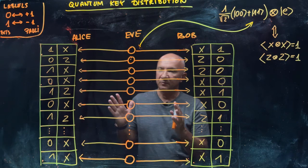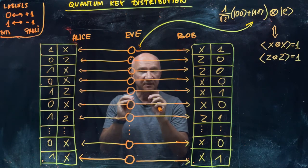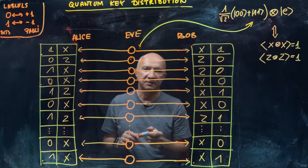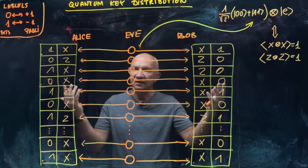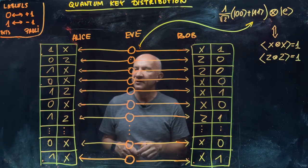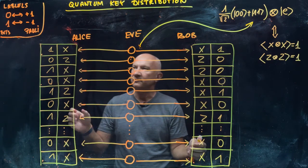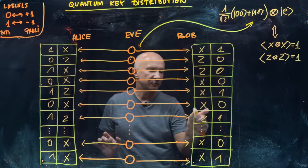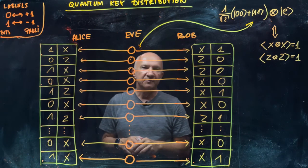Now let's look at the protocol. Alice and Bob will choose randomly and independently for each incoming qubit whether to measure it in the X basis or Z basis. For each incoming qubit they make a random choice, independent from what the other one may be doing. They continue with a sequence of measurements on many many pairs of qubits generated by the source, and they keep a record — a record of the type of measurement they performed and also a record of the outcome.